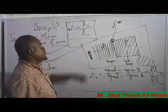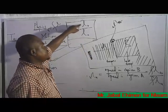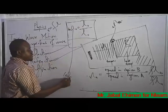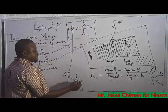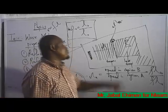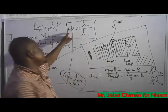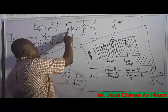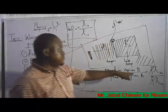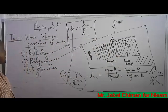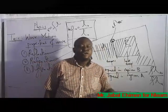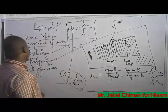The refractive index n_BA equals speed_B divided by speed_A, which equals lambda_B over lambda_A. That is how refraction works — when a wave bends slightly because it moves from a region of high density to low density or vice versa. That is refraction.